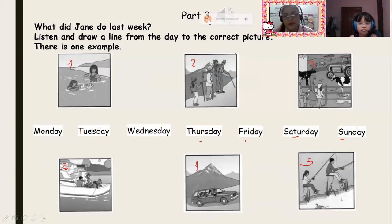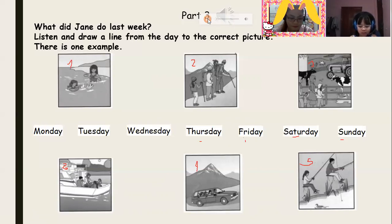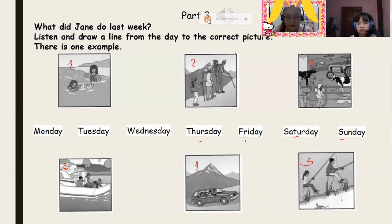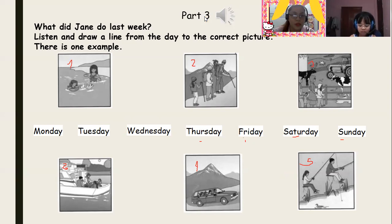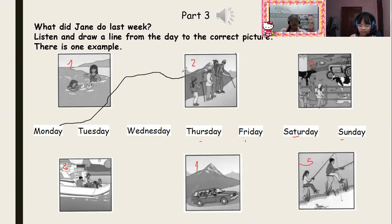Part three. Look at the pictures. What did Jane do last week? Listen and look — there is one example. Hello, Jane. It's good to see you in school again. Thanks, Mr. Park. Would you like to tell the class about your holiday? The best day was Monday — I climbed a mountain. Wow, did you? Yes. Can you see the line from the word Monday? On Monday, Jane climbed a mountain. So Monday — Jane climbed a mountain.